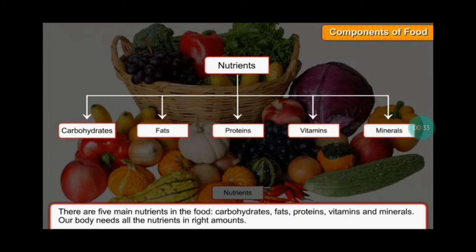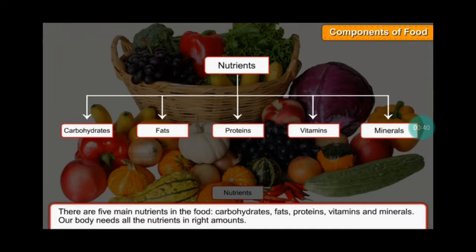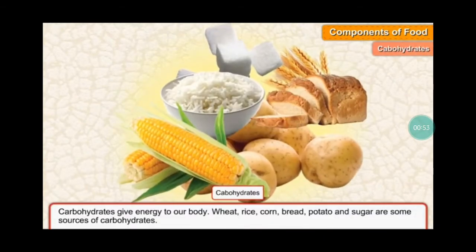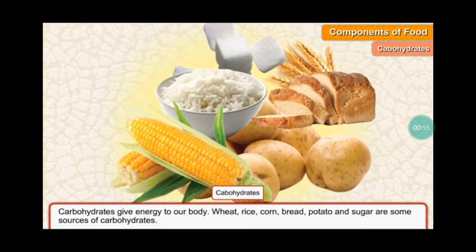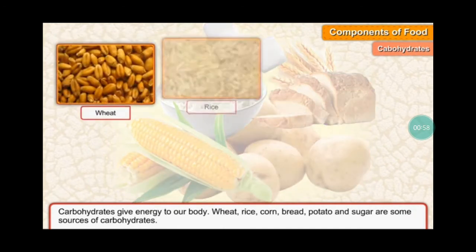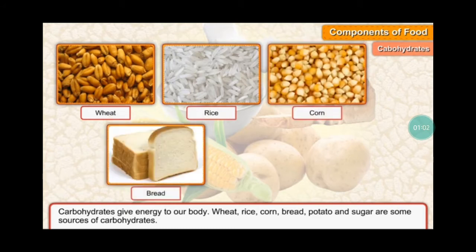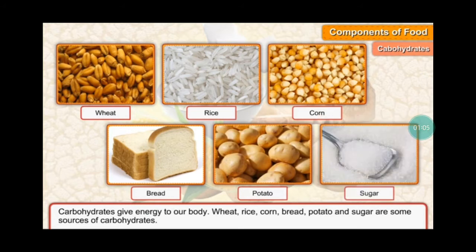The five main nutrients are carbohydrates, fats, proteins, vitamins, and minerals. Our body needs all the nutrients in the right amounts. Carbohydrates give energy to our body. Rice, corn, bread, potato, and sugar are some sources of carbohydrates.